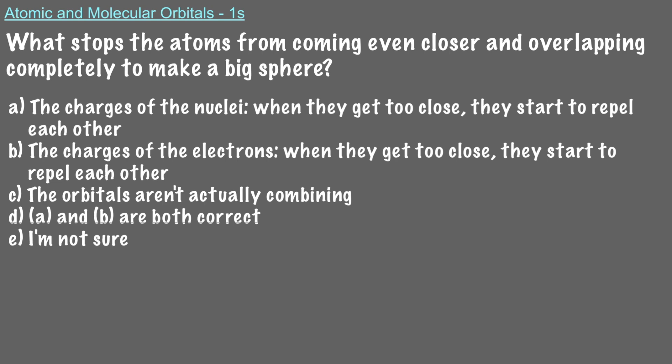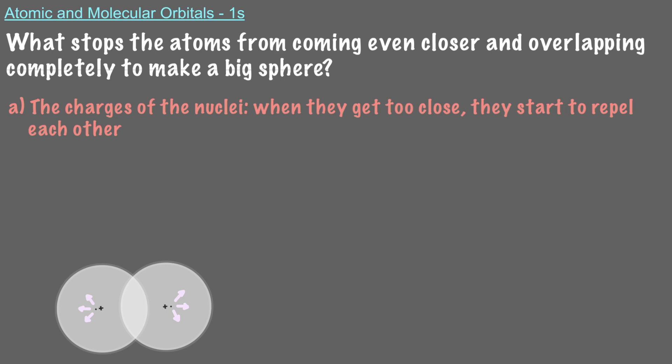What stops the atoms from coming even closer and overlapping completely to make a big sphere? When two 1s orbitals combine, they don't form a sphere because the positive charges of the nuclei repel each other. Instead, they form this shape, which is called the sigma 1s wave.